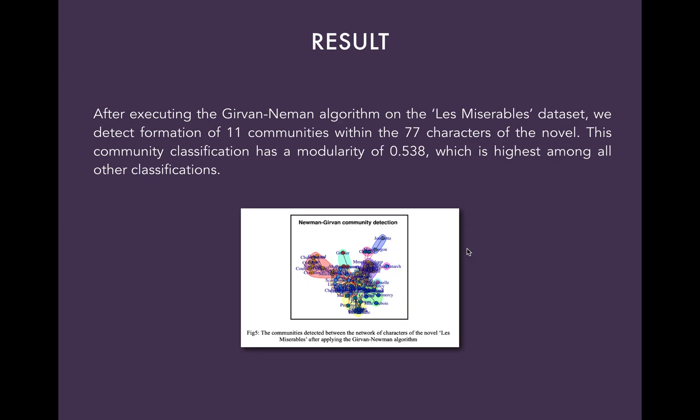After executing the Girvan-Newman algorithm on the Les Misérables dataset, we detect the formation of 11 communities with 77 characters as nodes. This community classification has a modularity of 0.538, which is the highest among all the other classifications. We can see the communities formed in this network in the image shown below.